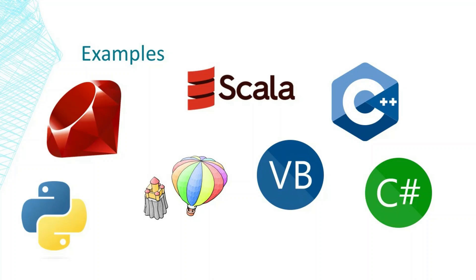Examples of object-oriented programming languages — these may be some of the languages you are using on a daily basis. They are C#, Visual Basic, C++, Scala, Ruby, Smalltalk, and the now more famous Python.